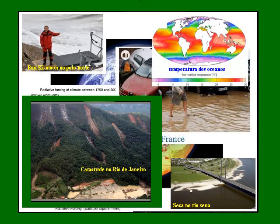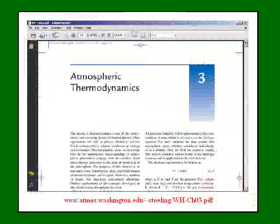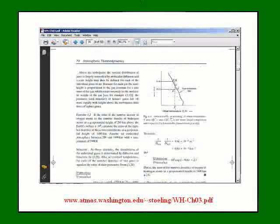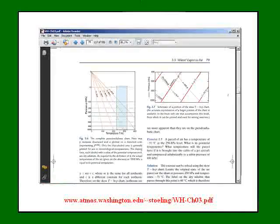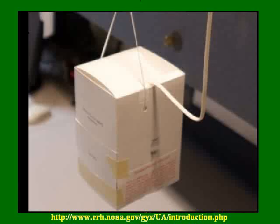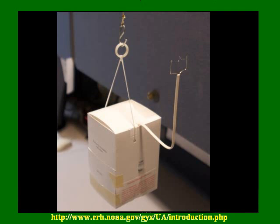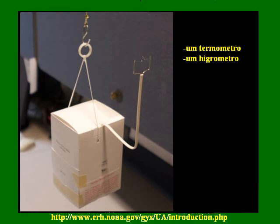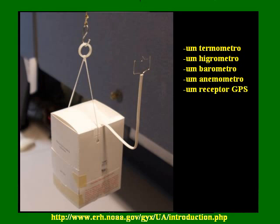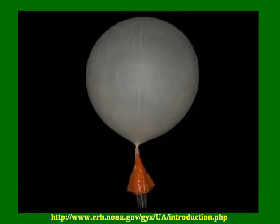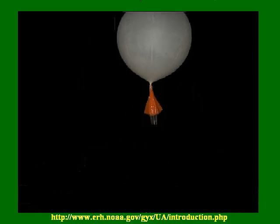Seeking the physical sciences, we find the thermodynamics of the atmosphere that perfectly explain the greenhouse effect as a natural phenomenon. The thermodynamic study of the atmosphere starts with the assembly of equipment in a container: thermometer, hygrometer, barometer, anemometer, a GPS receiver, a radio transmitter and a parachute attached to a helium balloon. The connected equipment at the right time is released, allowing the balloon to rise into the atmosphere and transmit data to a ground station.